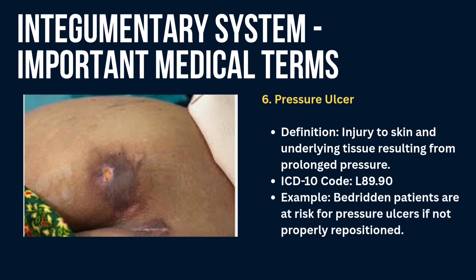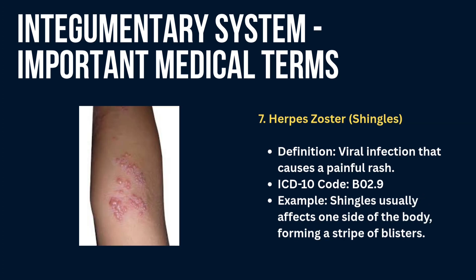Next is herpes zoster or shingles — a viral infection that causes a painful rash. Example: shingles usually affects one side of the body, forming a stripe of blisters.